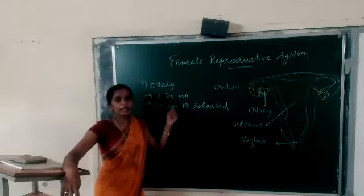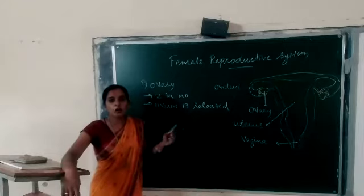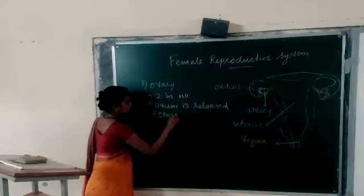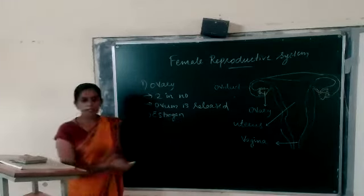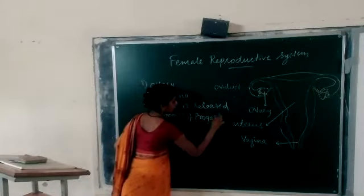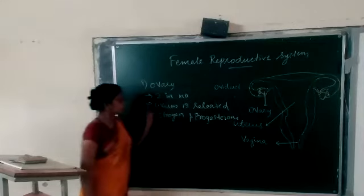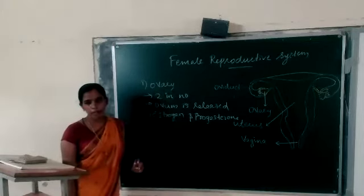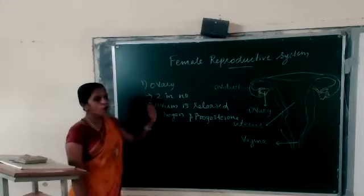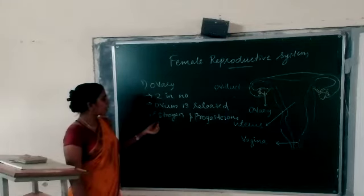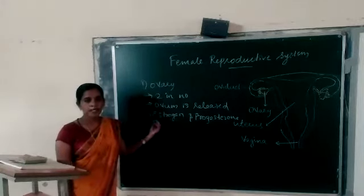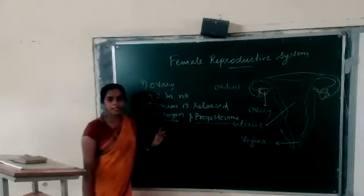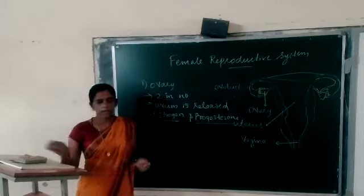One more thing: the female reproductive hormones are also secreted by the ovary. So these three points are very important regarding the ovary — a pair of ovaries are present, the ovum is released by the ovary, and also the female hormones estrogen and progesterone are secreted by the ovary.